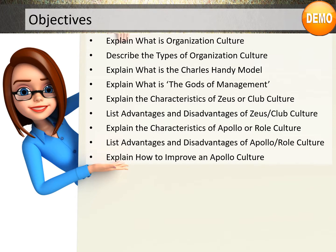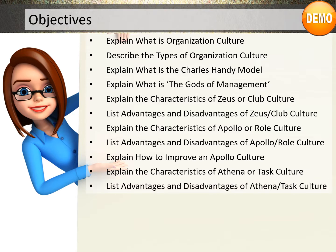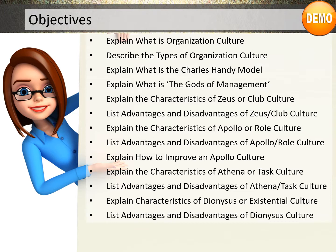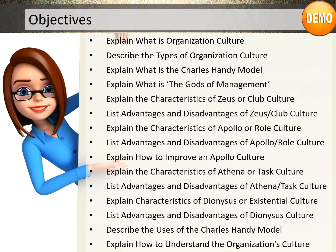Further objectives include: explain how to improve in Apollo culture; explain the characteristics of Athena or task culture; list advantages and disadvantages of Athena or task culture; explain the characteristics of Dionysus or existential culture; list advantages and disadvantages of Dionysus culture; describe the uses of the Charles Handy model; and explain how to understand an organization's culture.